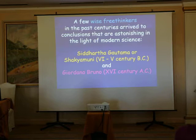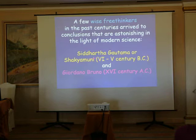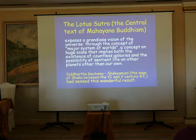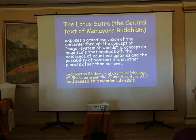A few wise free thinkers in past centuries arrived at conclusions that are astonishing in the light of modern science. One was Siddhartha Gautama or Shakyamuni, between the 6th and 5th centuries before Christ, and Giordano Bruno in the 16th century. The Lotus Sutra, central text of Mahayana Buddhism, exposes a grandiose vision of the universe through the concept of major systems of worlds — implying both the existence of countless galaxies and the possibility of sentient life on other planets.